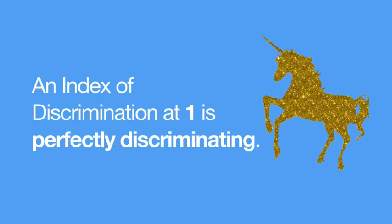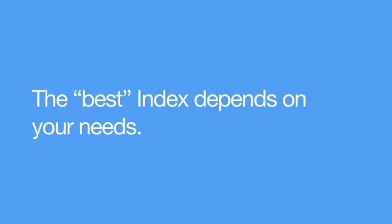An index of discrimination that equals 1 is said to be perfectly discriminating. This is a bit of a golden unicorn because, let's be realistic, you're rarely going to have questions that are perfectly discriminating. But how cool would a one-question exam be? All this said, there is no single best value because it really depends on the purpose of the question. If you want everyone to master the content — like for a formative assessment — then you want to see very low indices of discrimination. But if you want to be able to tell the difference between high and low performers, like a bell curve, then you'll want questions with a high index of discrimination. To be honest, the best exams are going to have some questions of both.